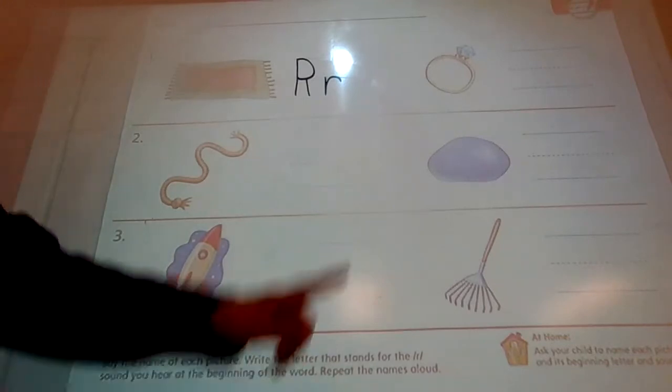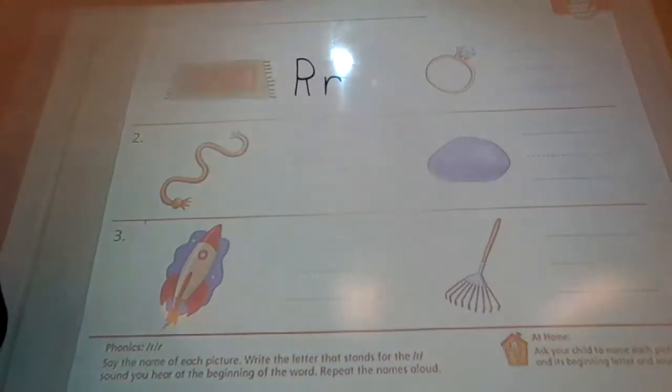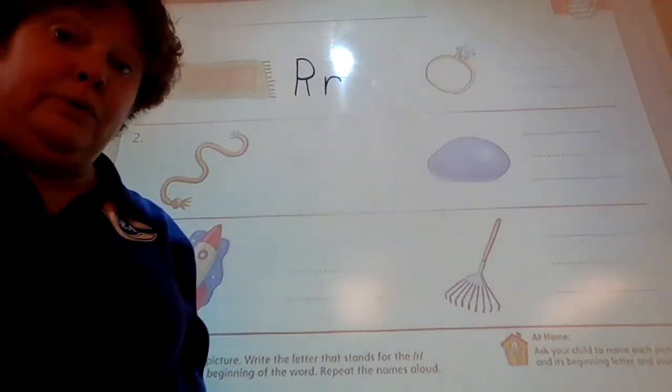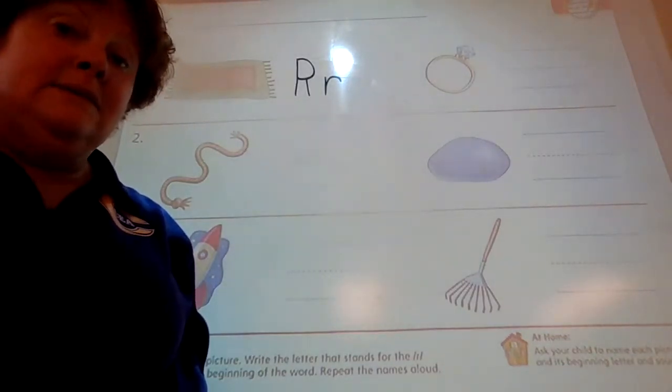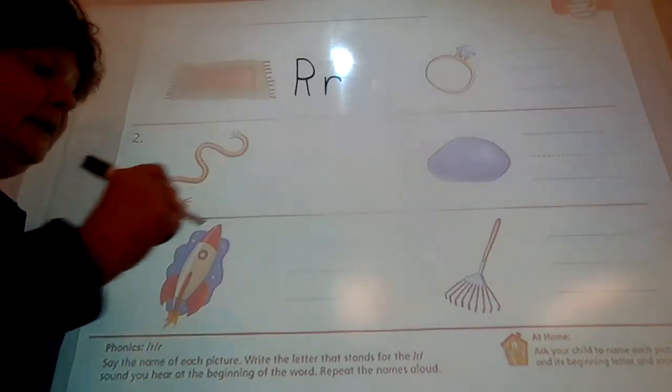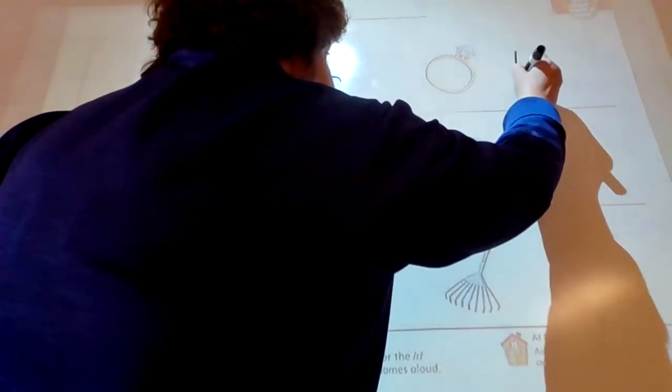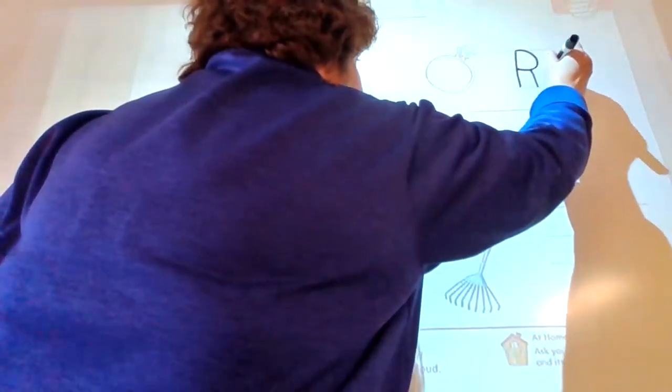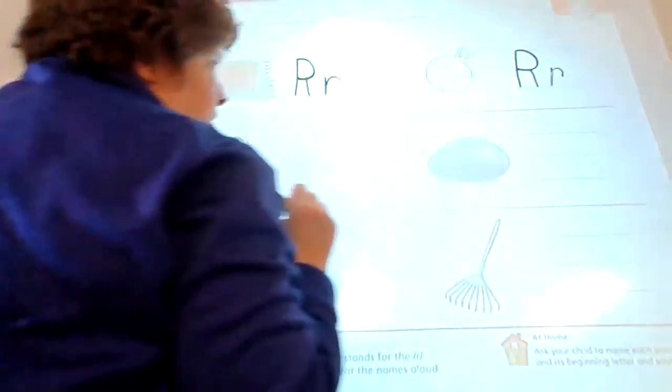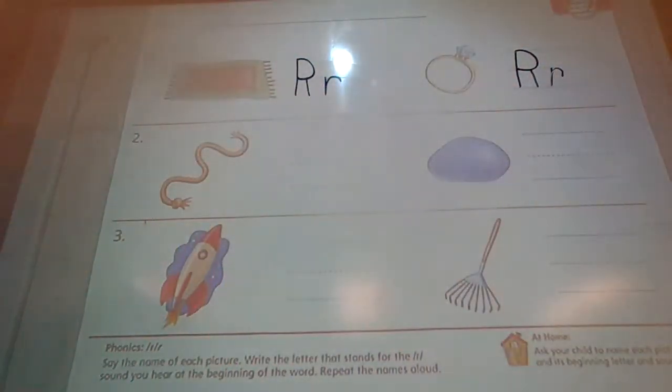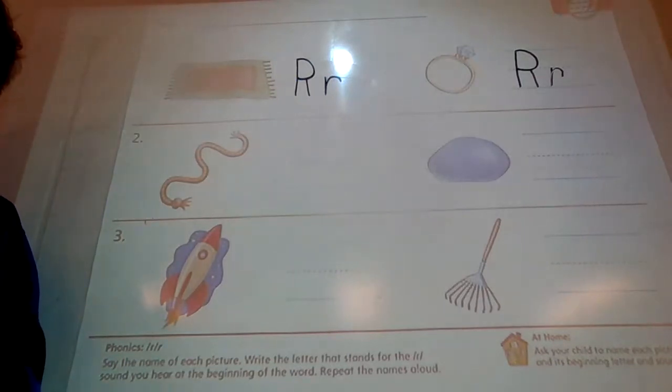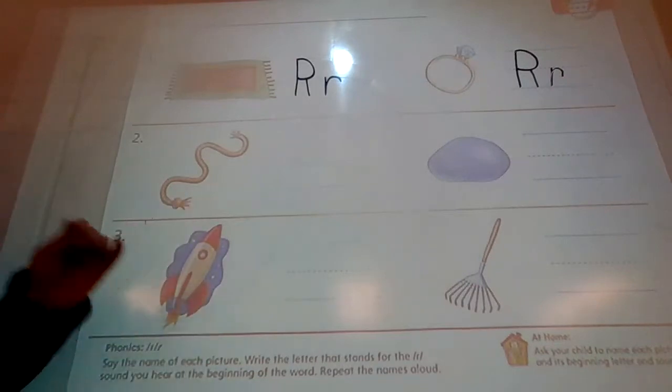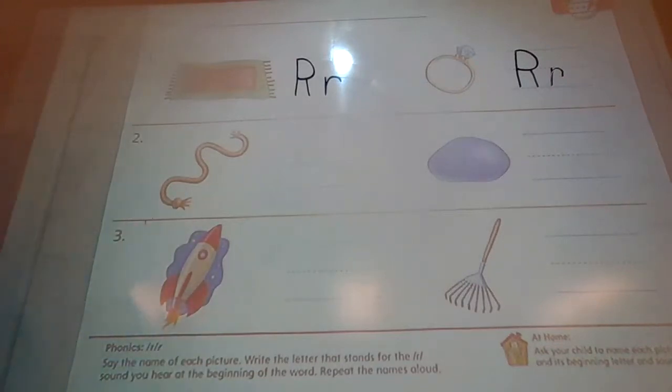All right, what is our next picture? What's that picture over there? That's a picture of a ring. So does a ring start with rrrr? Yes, it does. So very neatly, capital R is going to be upstairs and downstairs. Lowercase r is just in the downstairs. You want to take your time and do a very amazing job because not only are we learning letters, but we're learning how to write them.